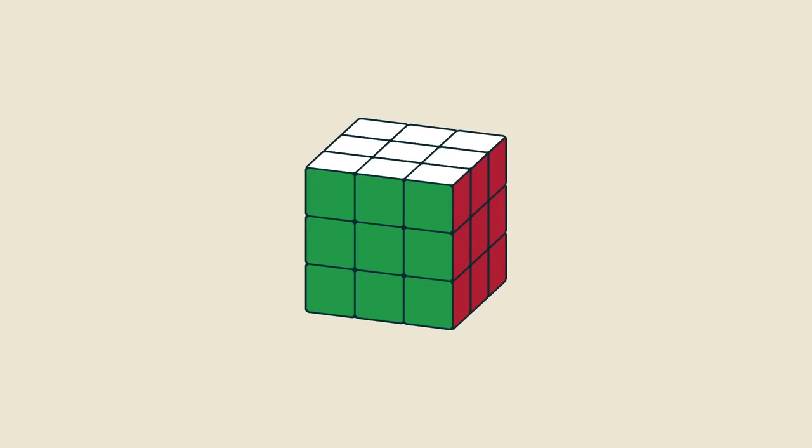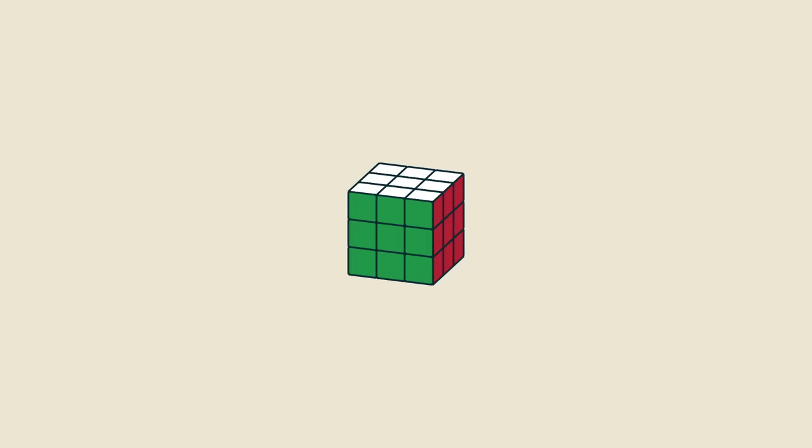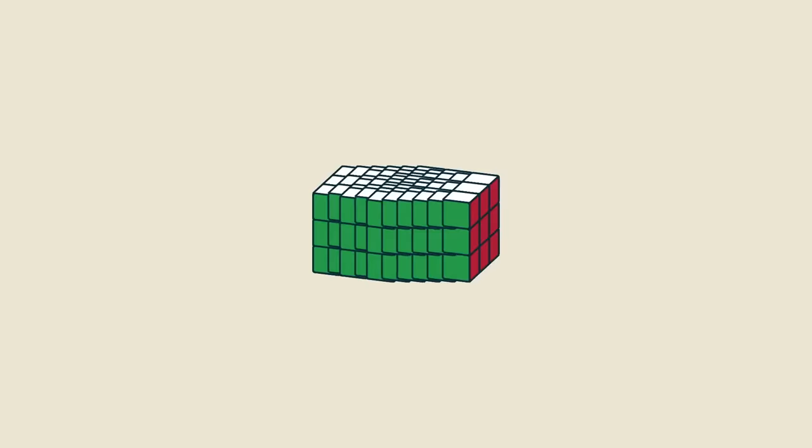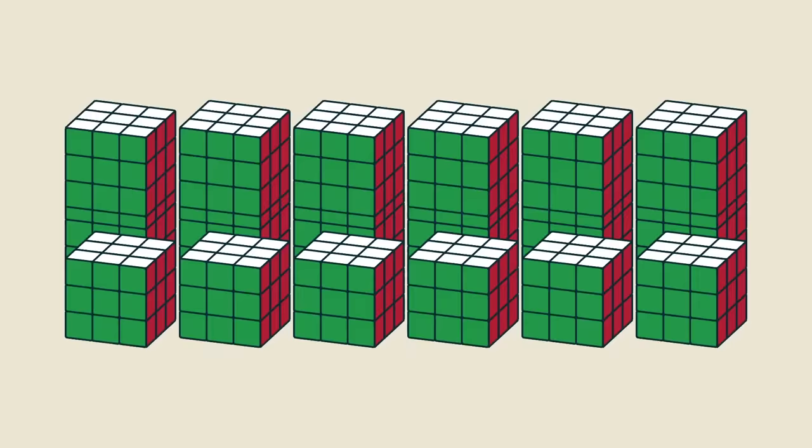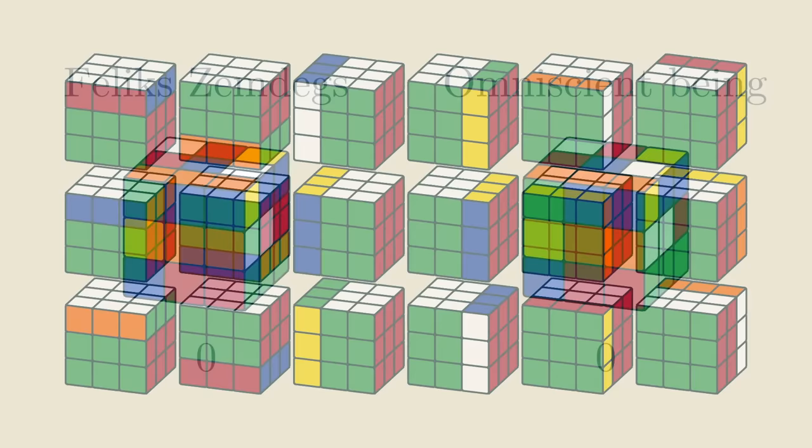Okay, first we actually need to define what we mean by move. For simplicity, let's say we never rotate the cube as a whole, so the middle squares always stay in the same place. Then, a move only rotates one side of the cube. The top, bottom, left, right, front or back. Each of the sides can be rotated to three new positions, so that gives us 18 possible moves in total.